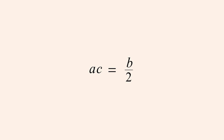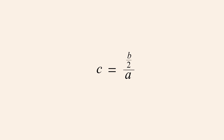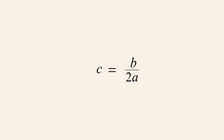We must now eliminate the variable A on the left so that we end up with C alone on the left side. To do this, we divide both sides of the equation by A. The A's in the numerator and denominator on the left then cancel, leaving C alone on the left. We can simplify the complex fraction on the right, since dividing the fraction B over 2 in the numerator by A is the same as multiplying B over 2 by the reciprocal of A, which is 1 over A. Multiplying the numerators and denominators gives us B over 2A. We have now solved the equation for C.